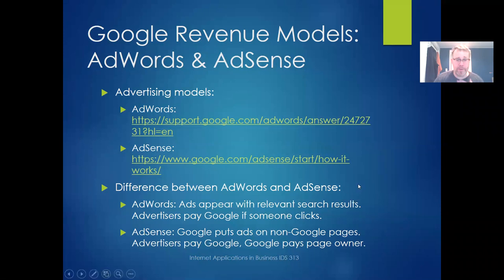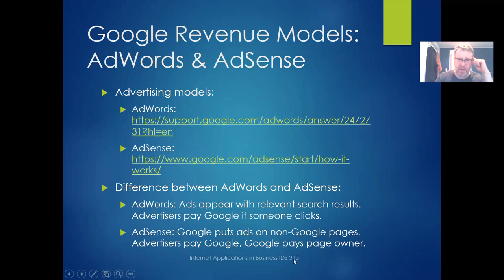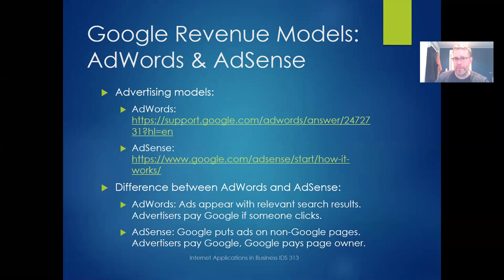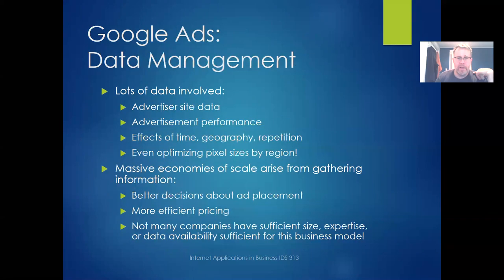With AdWords, advertisers pay Google if somebody clicks on the ad, and Google keeps all that money if it's on Google's own site. If it's another site, there's some revenue sharing. With AdSense, Google puts ads on non-Google pages. If somebody clicks on the ad, the advertisers pay Google, and Google pays a cut of that to the page owner — so to the blogger. That's the model.